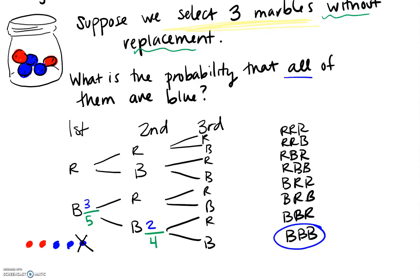We've pulled a blue first, then a second blue. So the probability of getting that third blue marble — there is now one blue marble left out of a total of three marbles. To find this probability, we do exactly what we did in the tree diagrams and multiply all of this together. So the probability of getting three blue marbles is three-fifths times two-fourths times one-third.